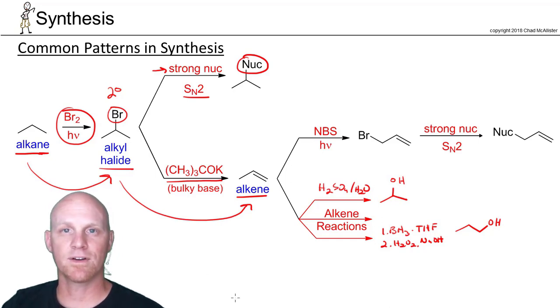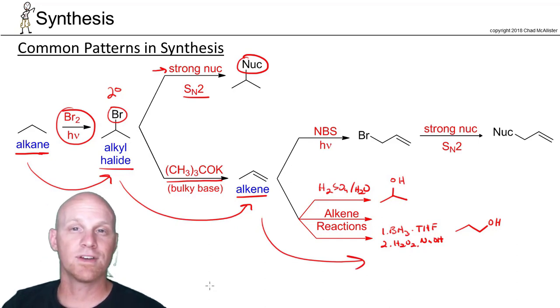When you can do two different reactions that are very similar, but just different in regioselectivity or different in stereoselectivity, those are things to pay attention to. They're great places for your instructor to test you on. We've gone from alkane to alkyl halide, alkyl halide to alkene, and then you've got a whole bunch of alkene reactions that are possible. You also learned how to brominate allylically.